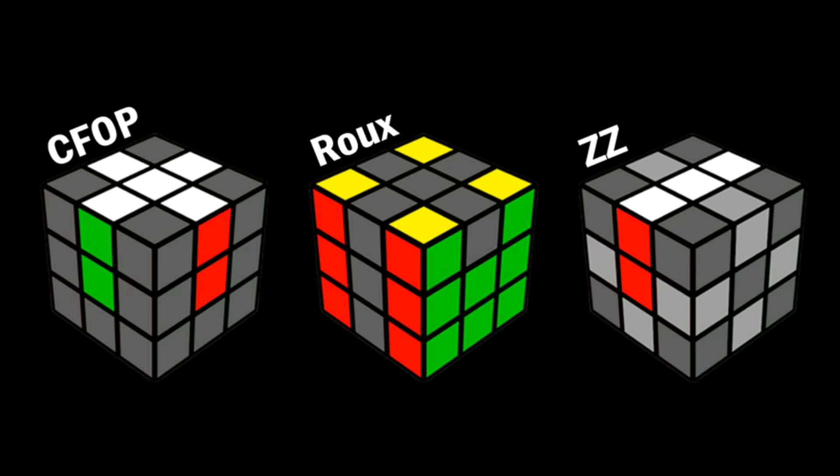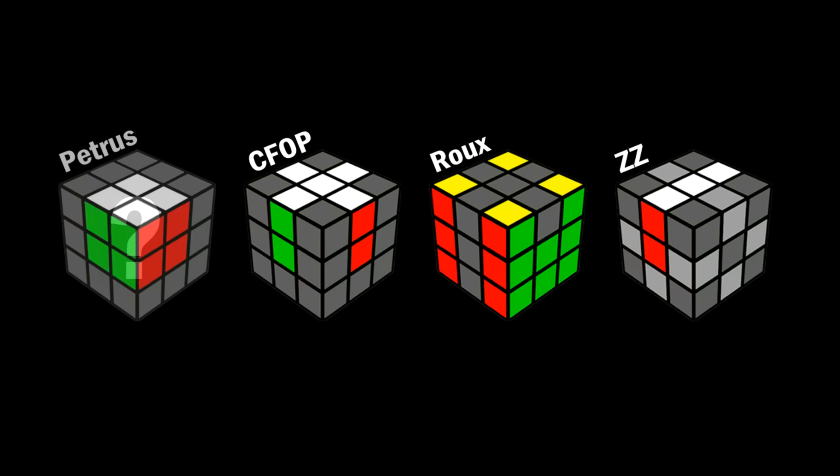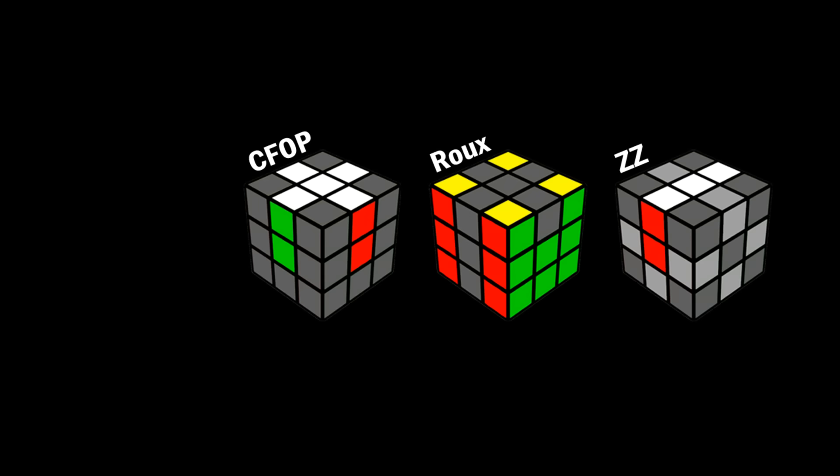CFOP, RU, and ZZ are the big three methods of speed solving. The big three used to be a big four with the Petrus method as well, but we don't talk about that anymore.